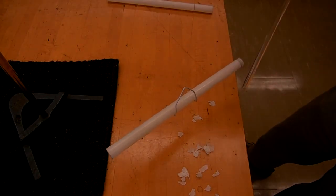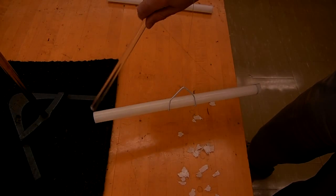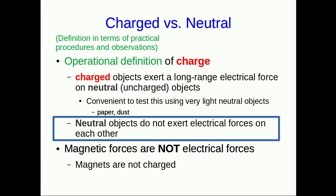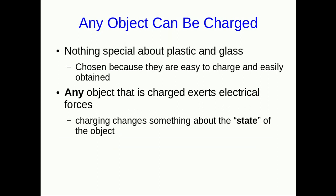Also, a neutral glass rod exerts no force on the neutral plastic rod. The point here is that there's nothing fundamental or special about plastic or glass that's making them exert forces. It's that when we rub them with selected other materials, we change their state, and they become this thing we call charged.